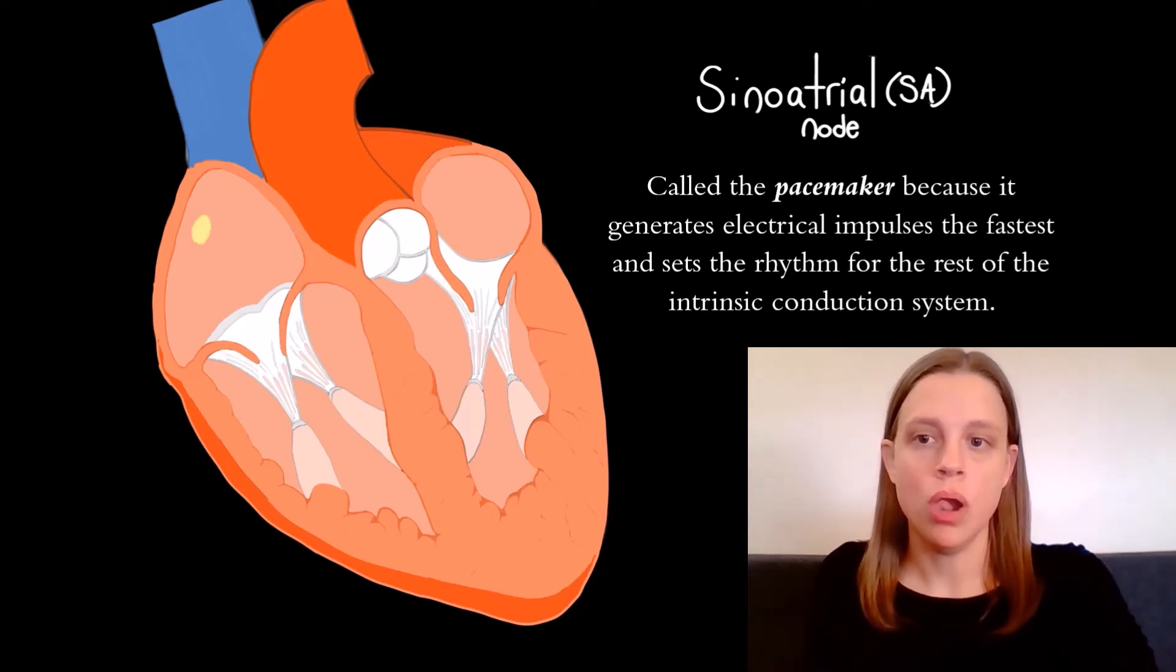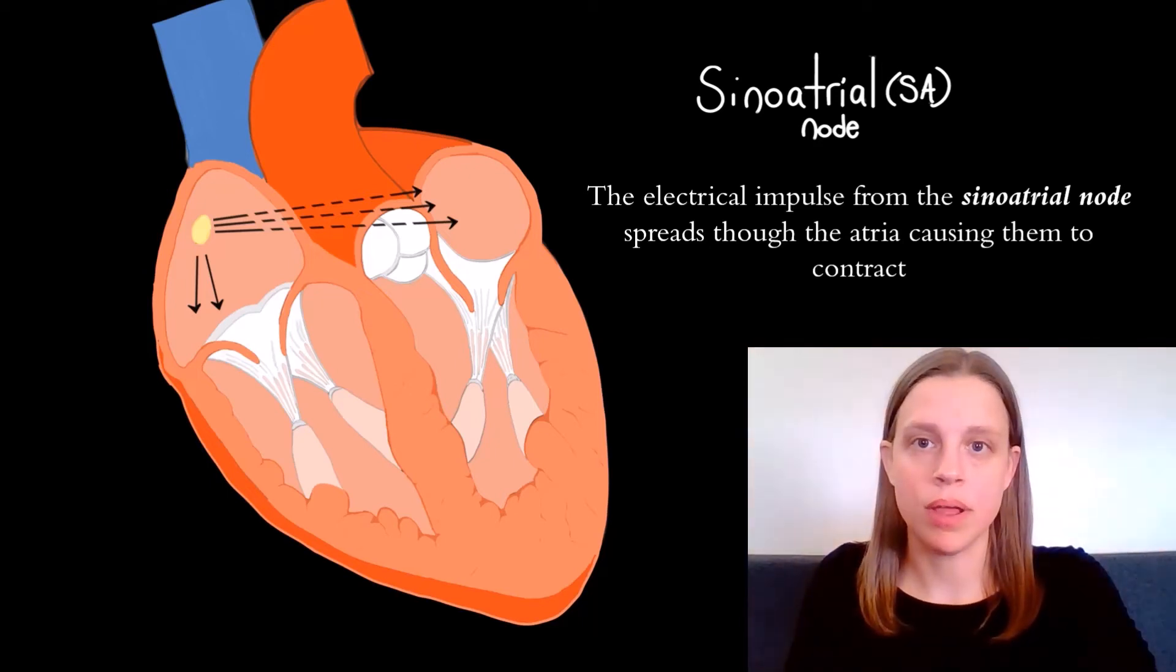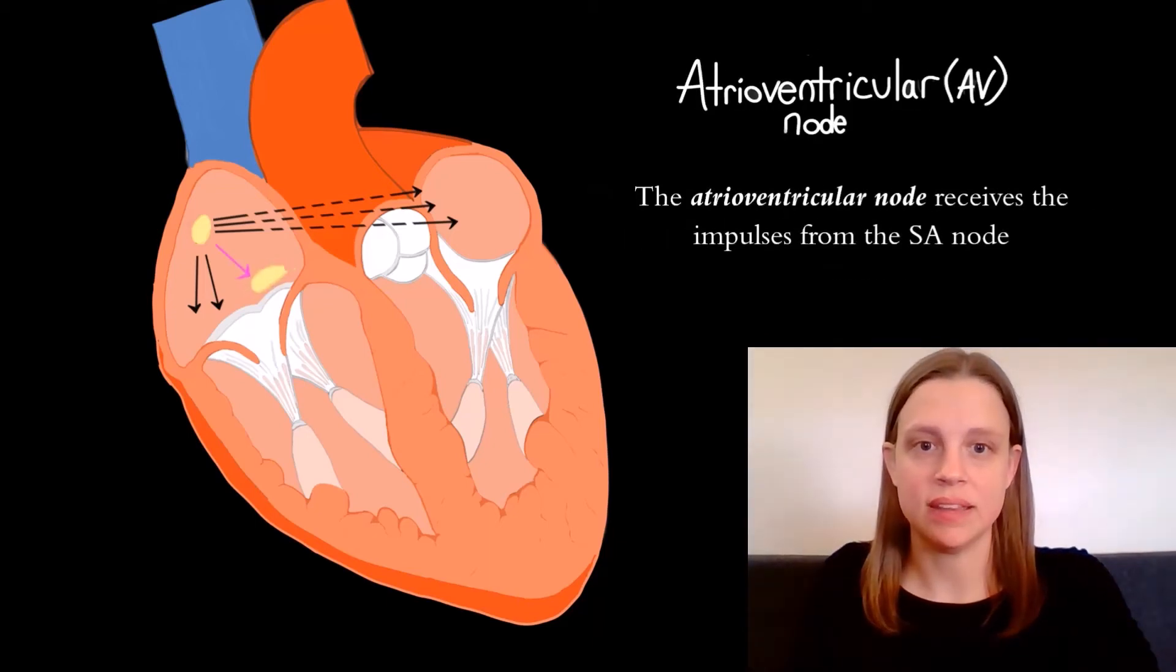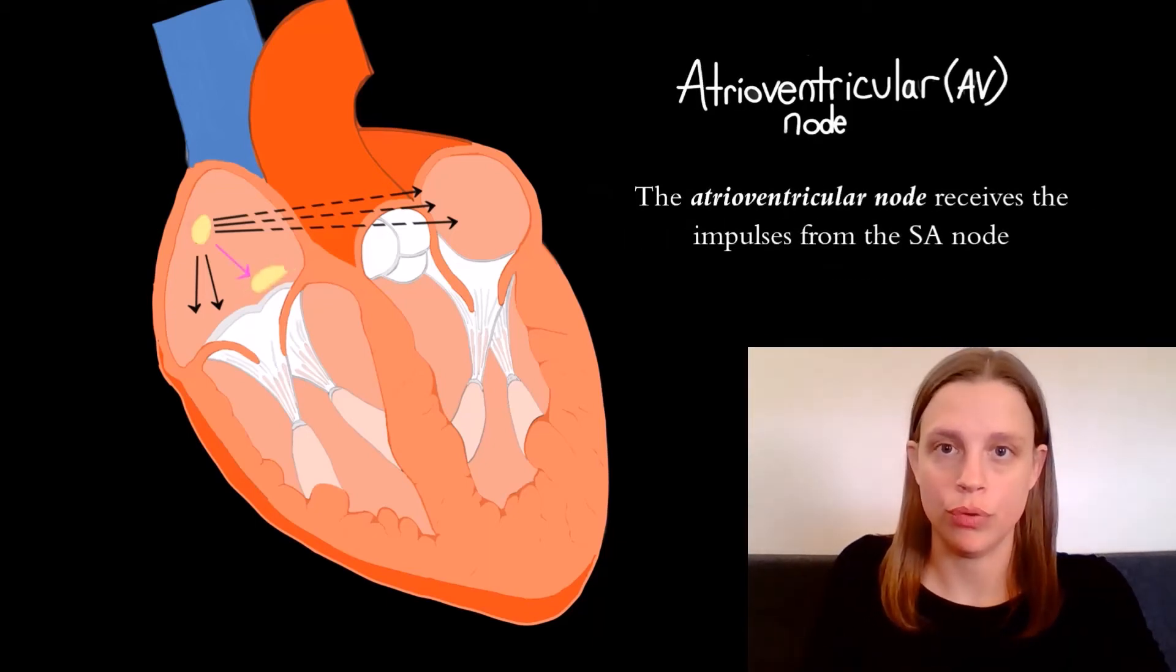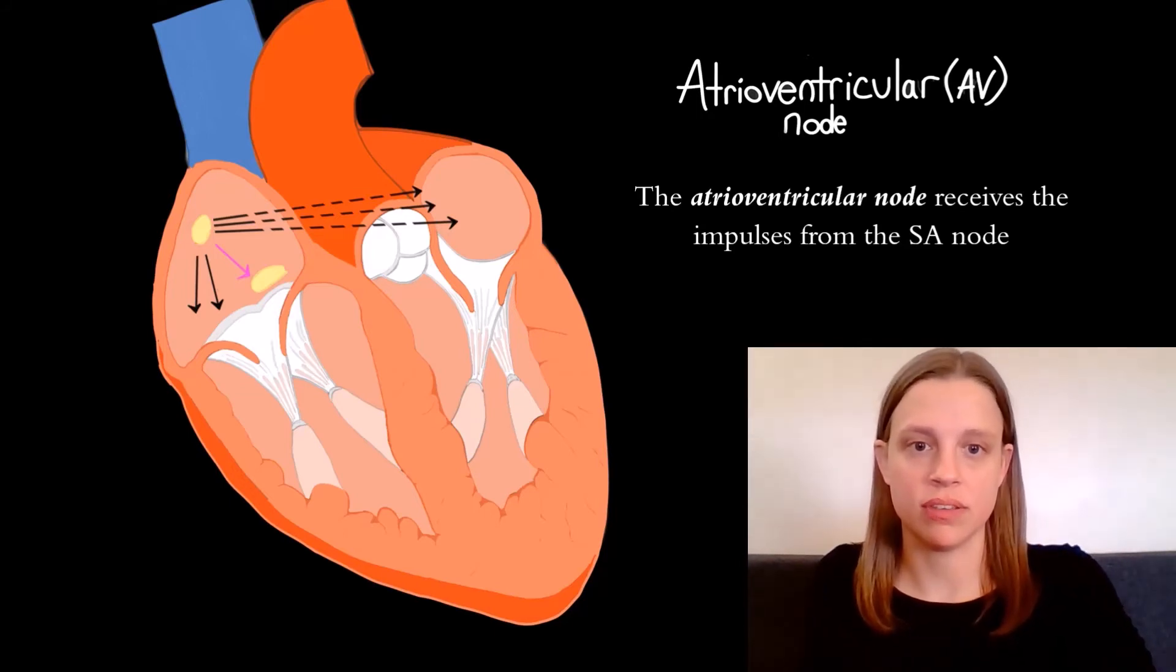When the SA node generates an impulse, that impulse travels throughout the atria, causing the atria to contract. And at the same time, that impulse ends up activating the atrioventricular node, which is the next part of the intrinsic conduction system.